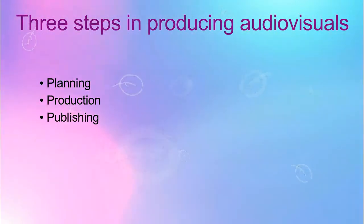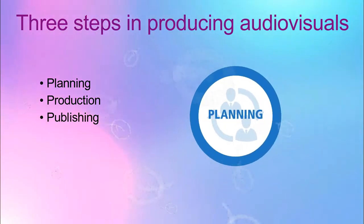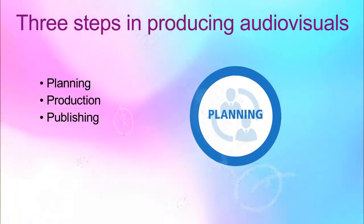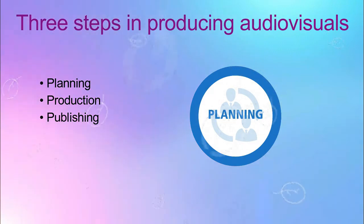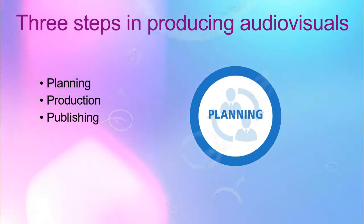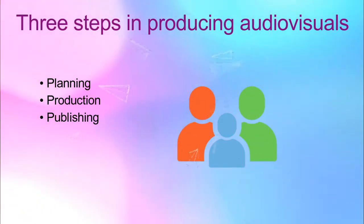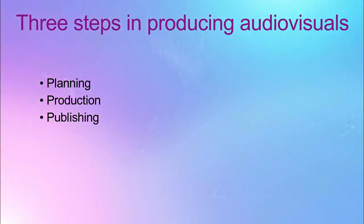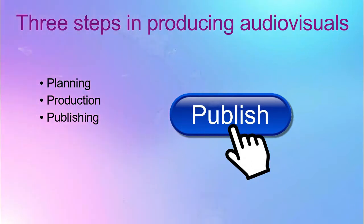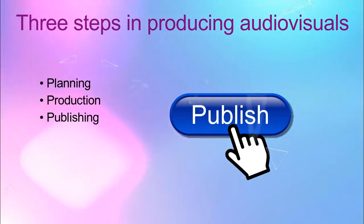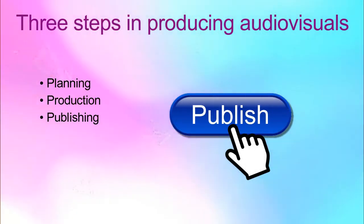Three steps in producing audiovisual. First, planning — this is the first step, where you brainstorm what content to create and prepare what you will need, such as the script, locations, artists, and so on. Second, production — this is the shooting or recording stage where you start to produce your video project. Third, publishing — the final part of producing your audio or video, which also requires editing and publishing your video on YouTube or Vimeo.